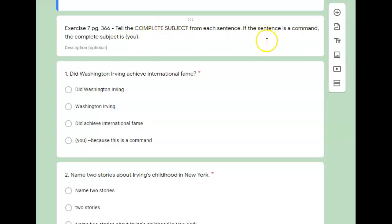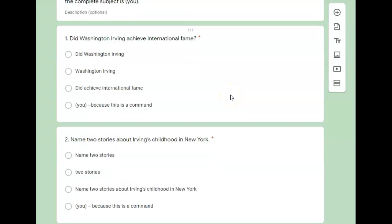Now, if the sentence is a command, the subject is you, and it's in parentheses because the word you won't be there. But if it's telling someone to do something, it's a command, that's going to be the subject. So we're going to do number one, two, and three together. And you can use these answers when you go to do your assignment.